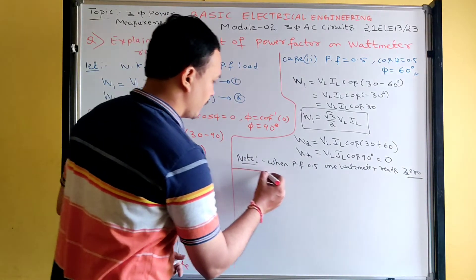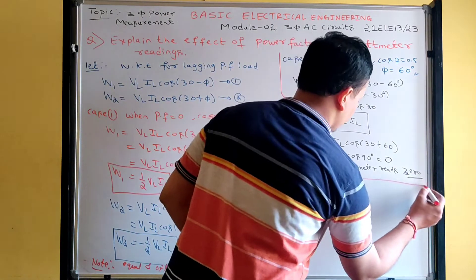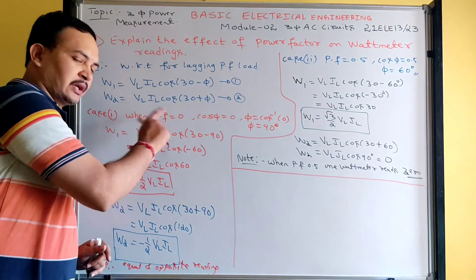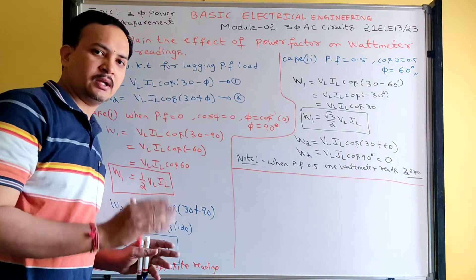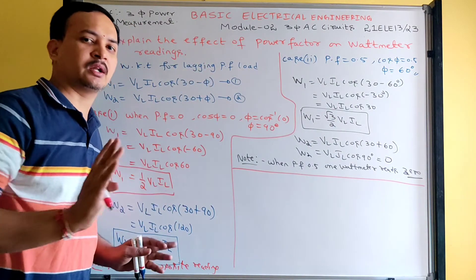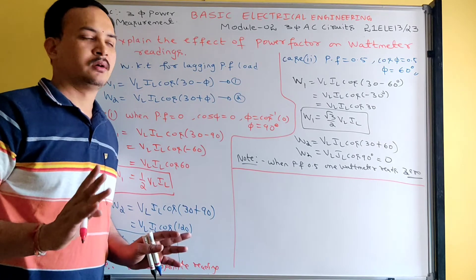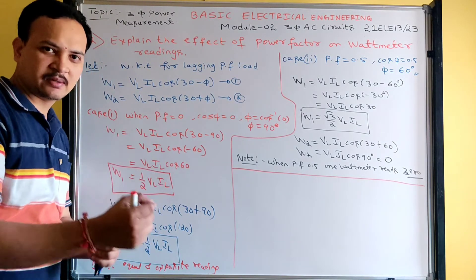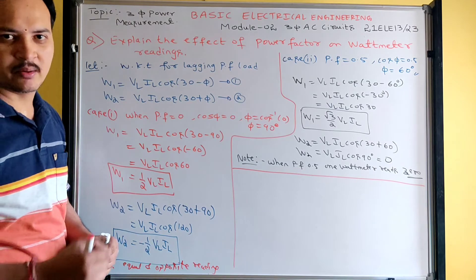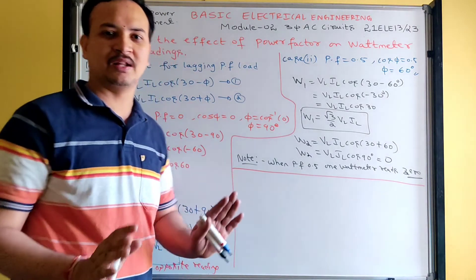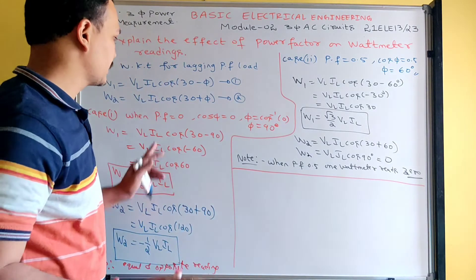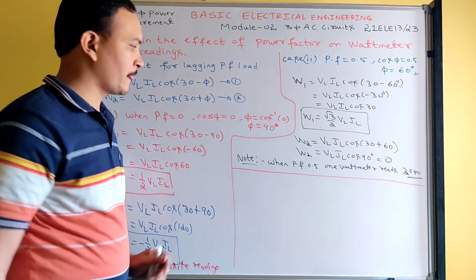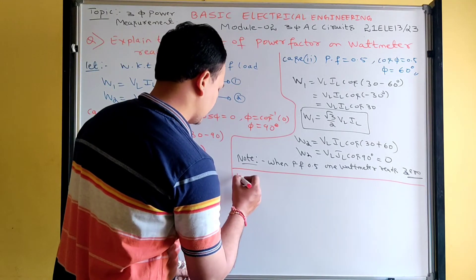We only need three cases: power factor = 0, power factor = 0.5, and power factor = 1. Don't take every value in between like 0.1, 0.2, 0.3, 0.4 — just these three: low, medium, and high. Now, Case 3.